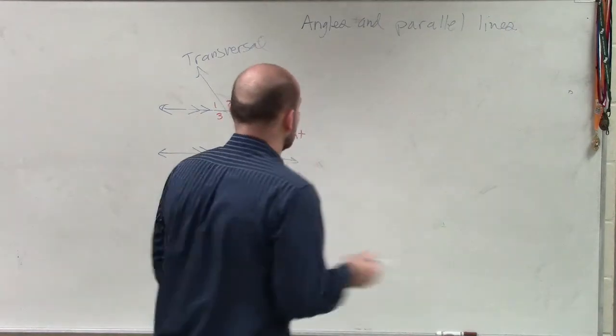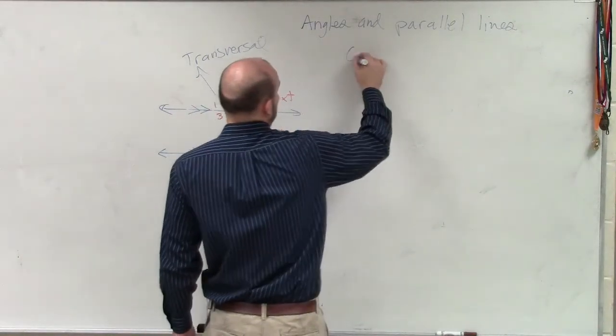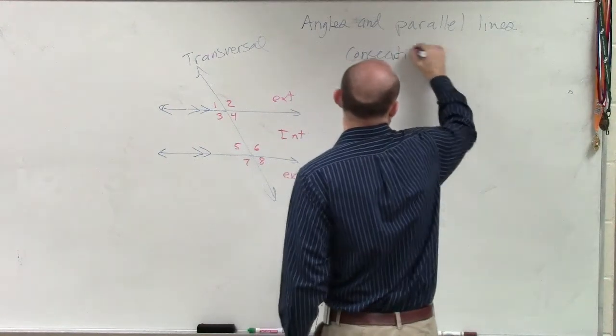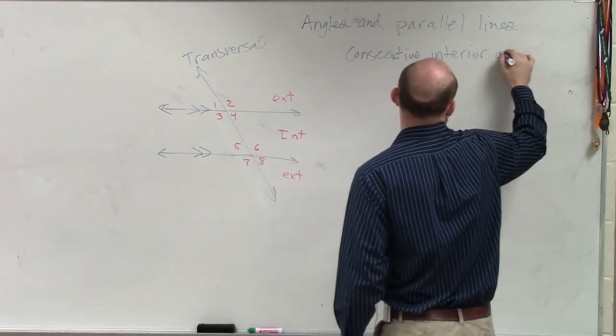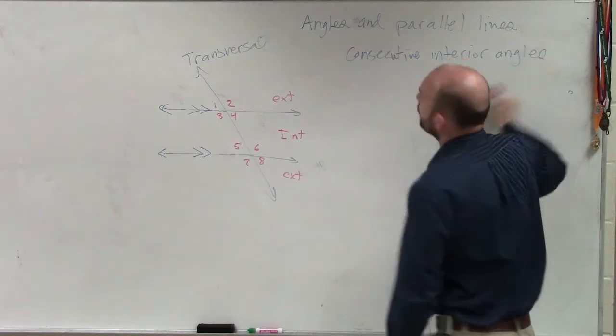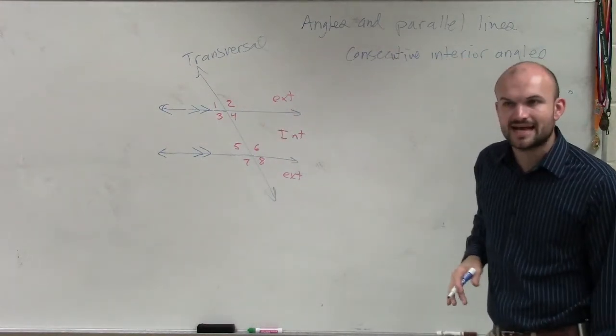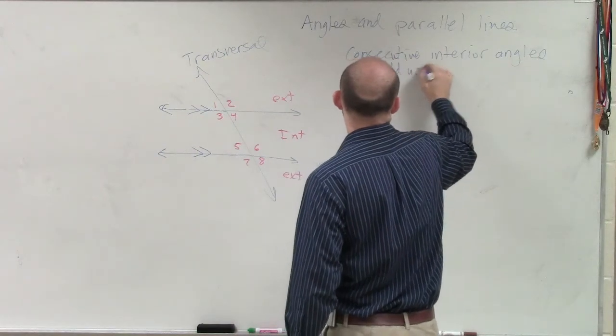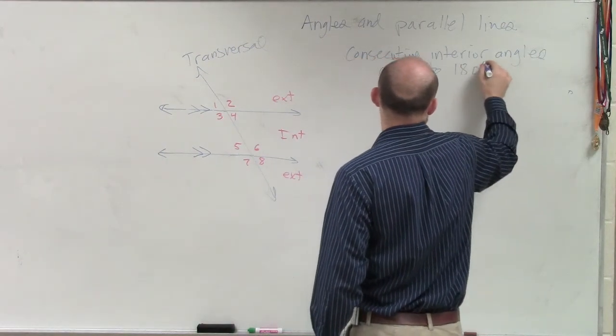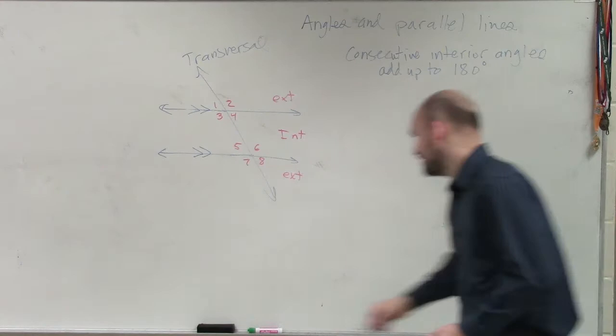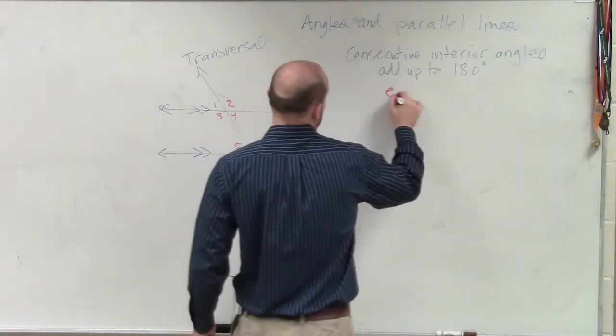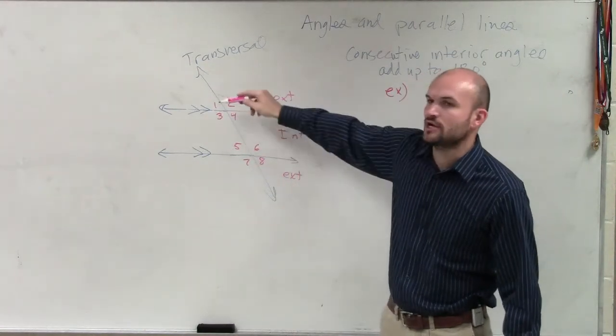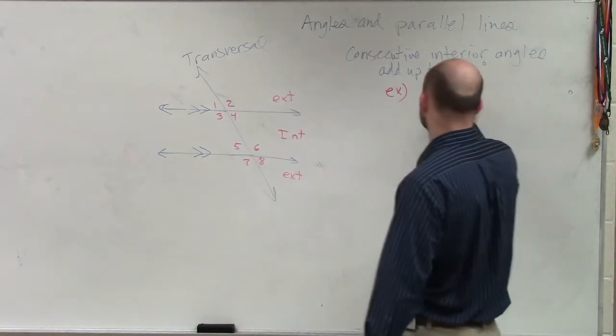I'm going to write them up there. So the first one we talked about was consecutive interior angles, right? And guess what, ladies and gentlemen? When you have parallel lines, consecutive interior angles add up to 180 degrees. Example. Sorry, I have to go through this really quickly. Consecutive interior angles, two angles that are on the inside, same side of the transversal.